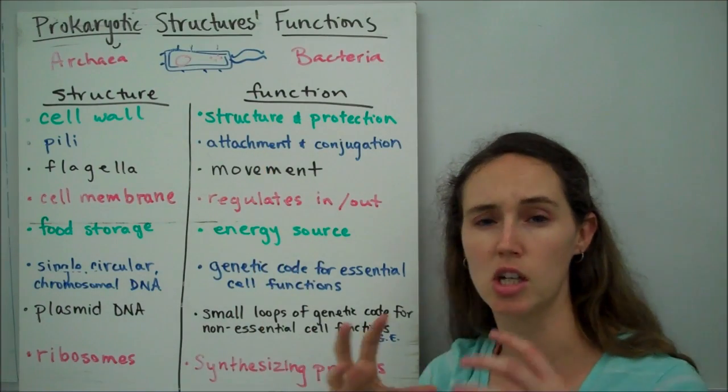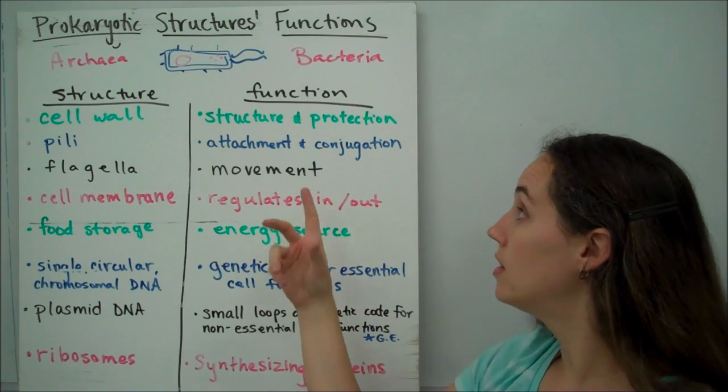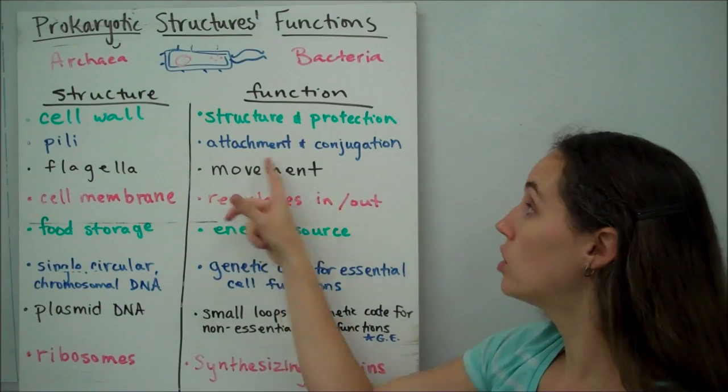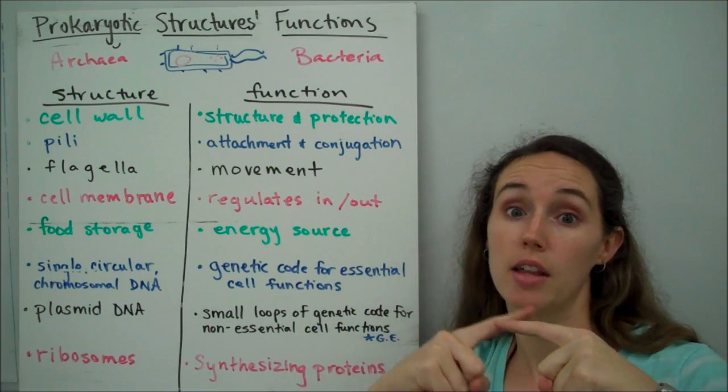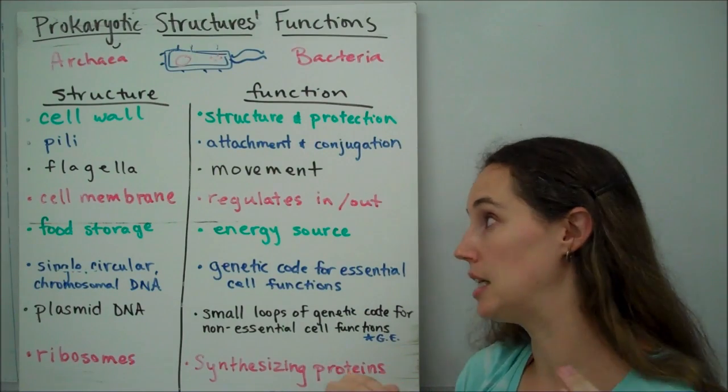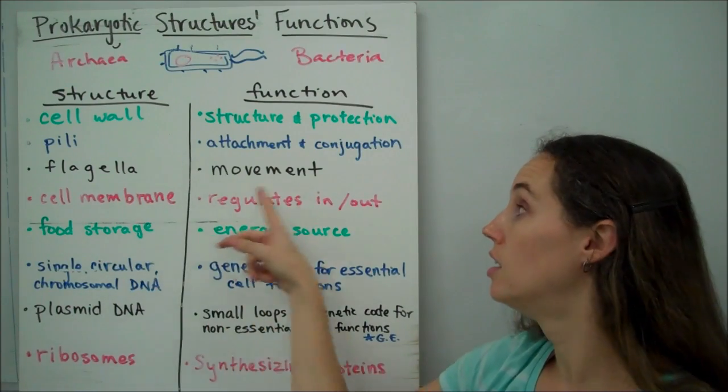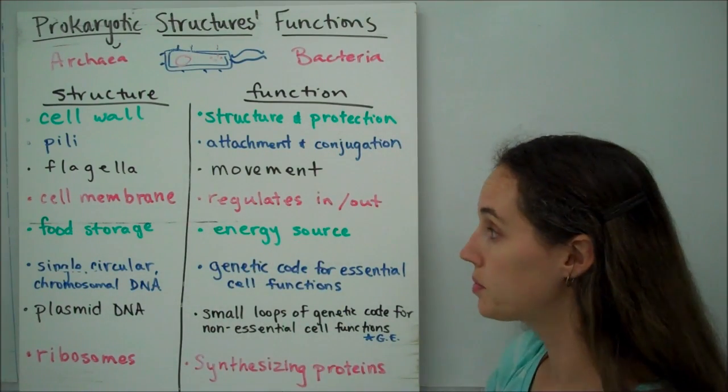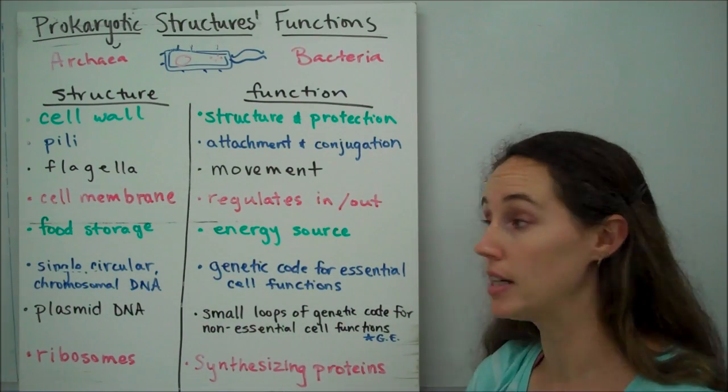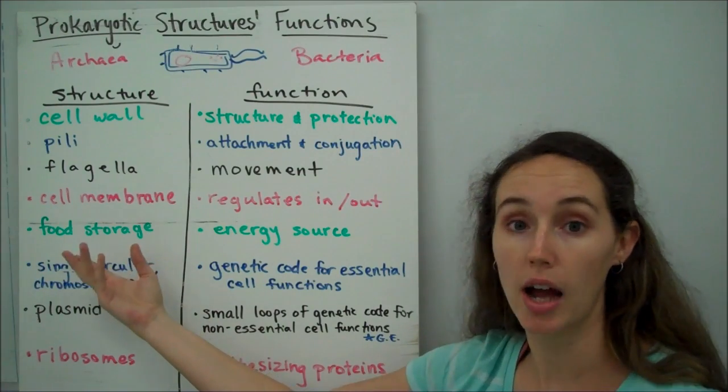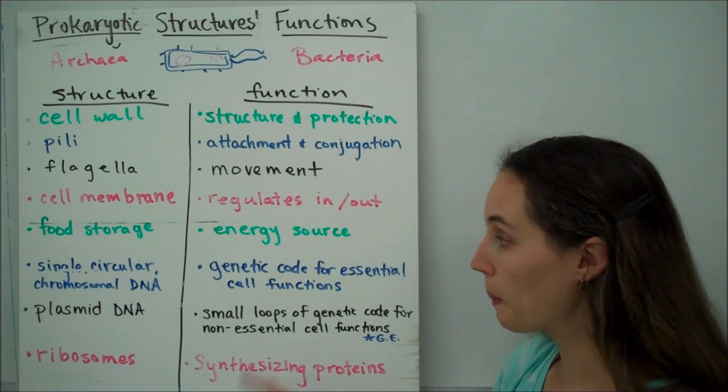The organisms that do have pili, they use them for attachment, so it's sort of like Velcro. It helps them stick onto cells and or other surfaces, and also for conjugation, which is what enables two prokaryotes to come together and exchange some of that plasmid DNA. Flagella that are found on some of these prokaryotic cells are used for movement, like little tails. Your cell membrane regulates what comes in and out of that prokaryotic cell. Food storage, obviously, the point of that is to have an energy source.